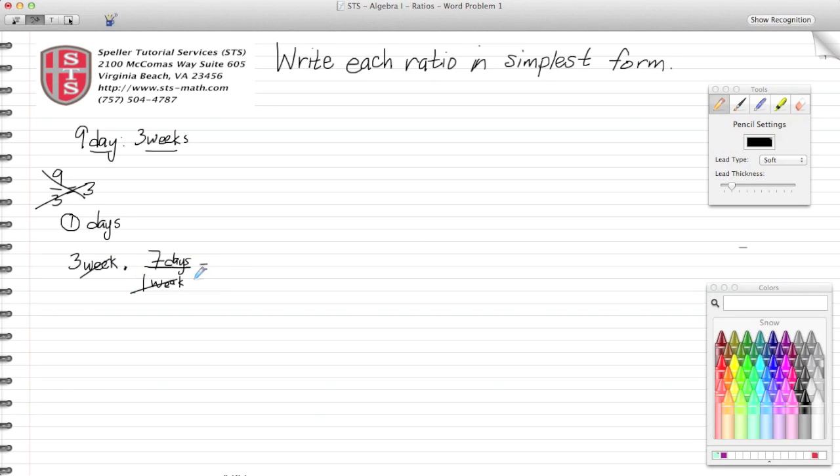Before I multiply, I can cancel, so I see that the unit of weeks goes away and I'm left with 21 days. So now I know 21 days is the same thing as three weeks.